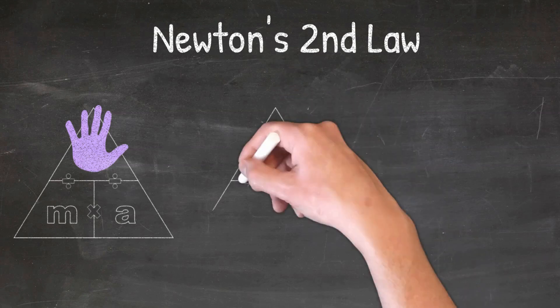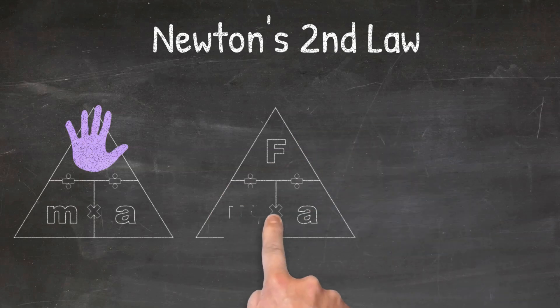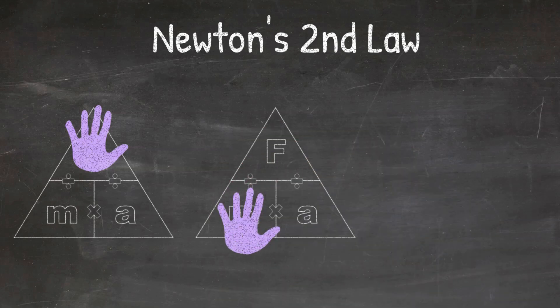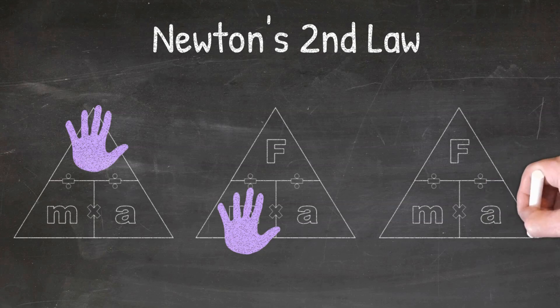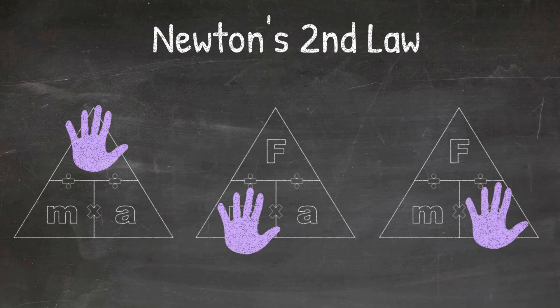If I'm solving for mass, I cover up the M, and the triangle tells me to do force divided by acceleration — because F is on top of A. And if I'm solving for acceleration, I cover up the letter A, and the triangle tells me to divide force by mass — because F is on top of M.